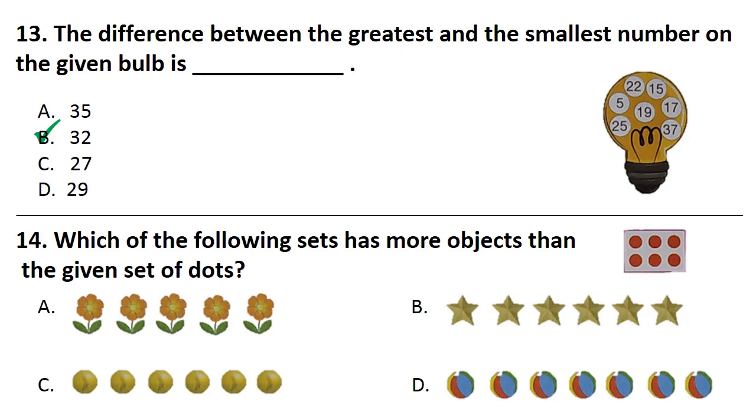Question No. 14. Which of the following sets has more objects than the given set of dots? Answer is Option D. That is with 7 balls.